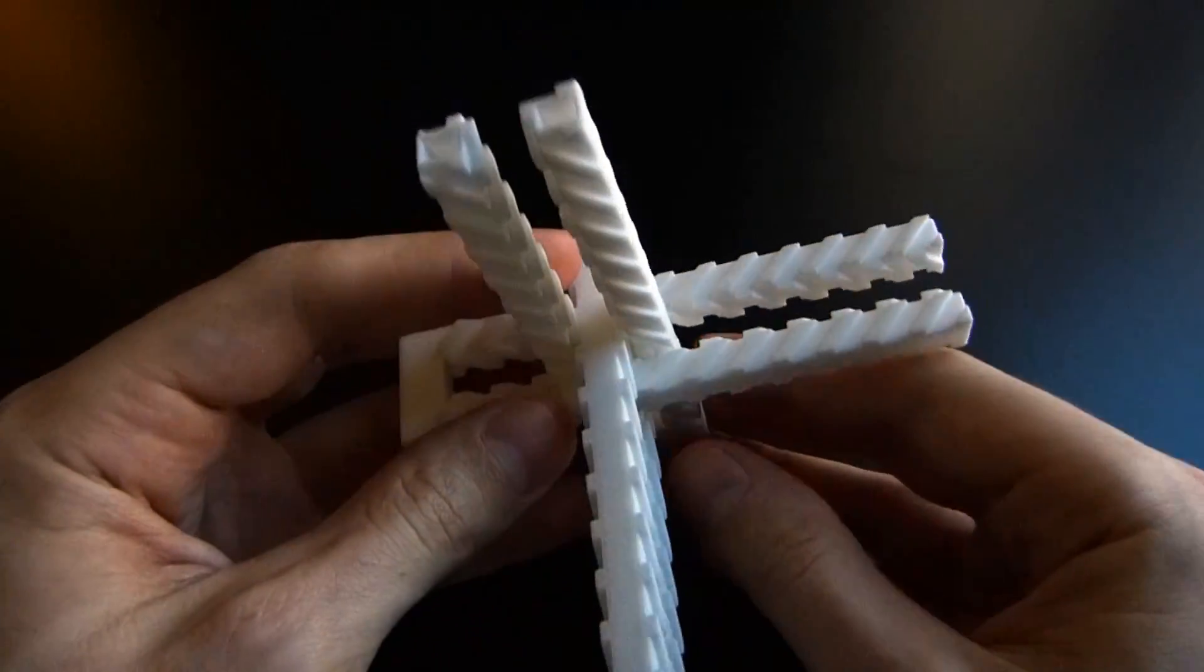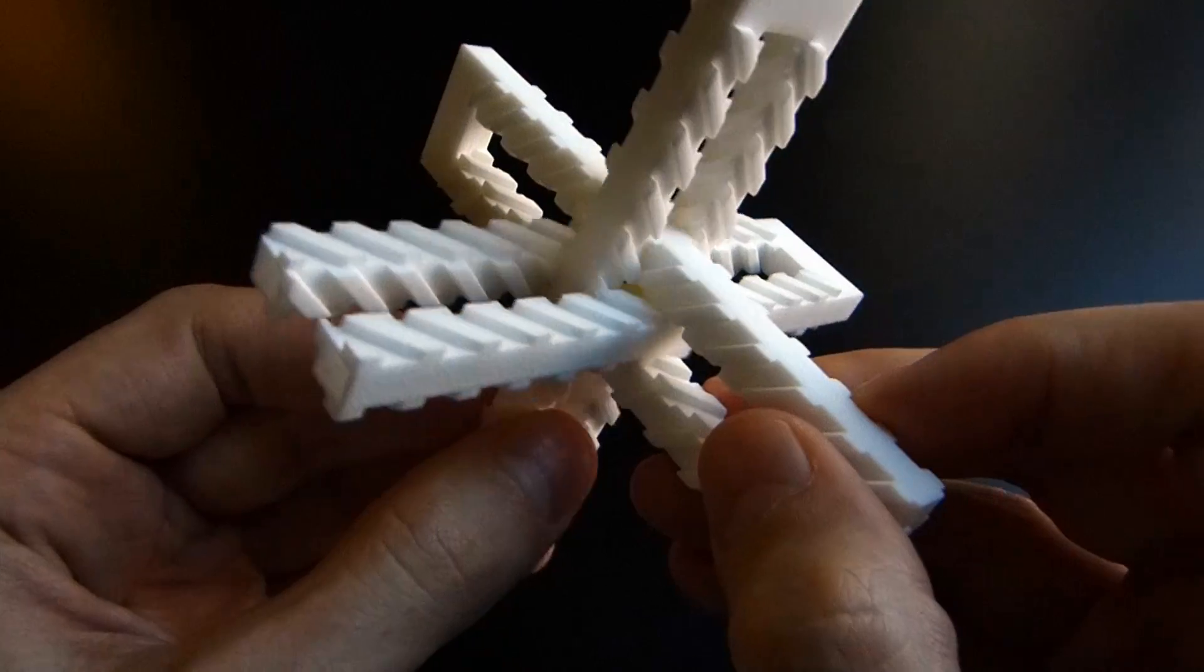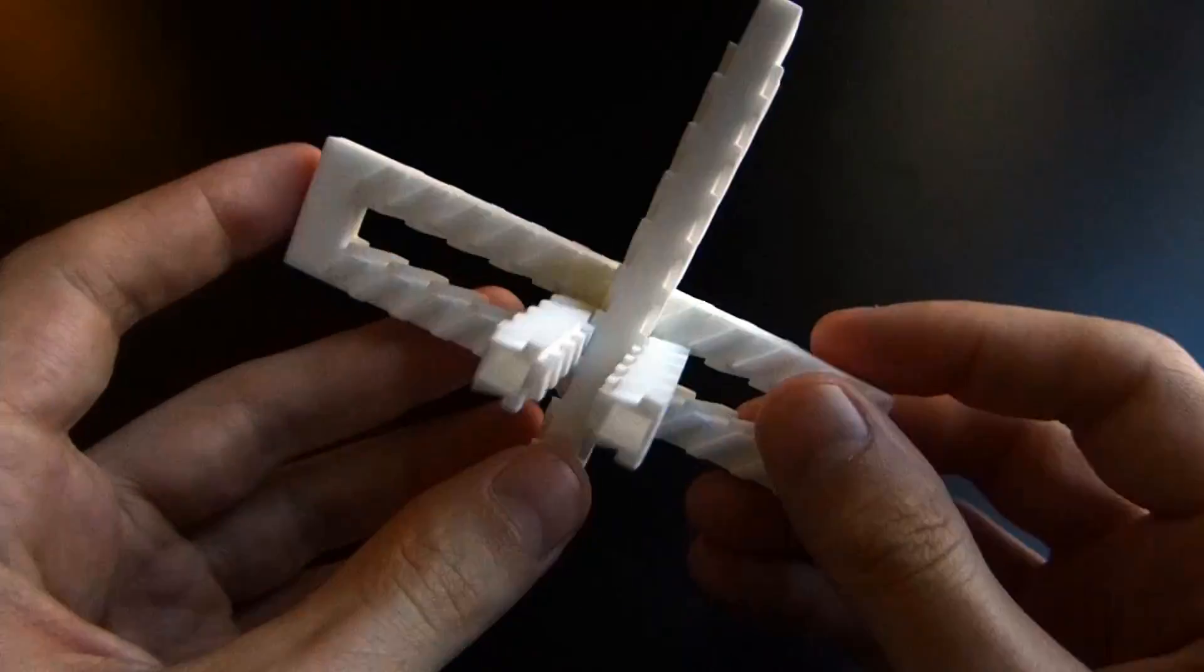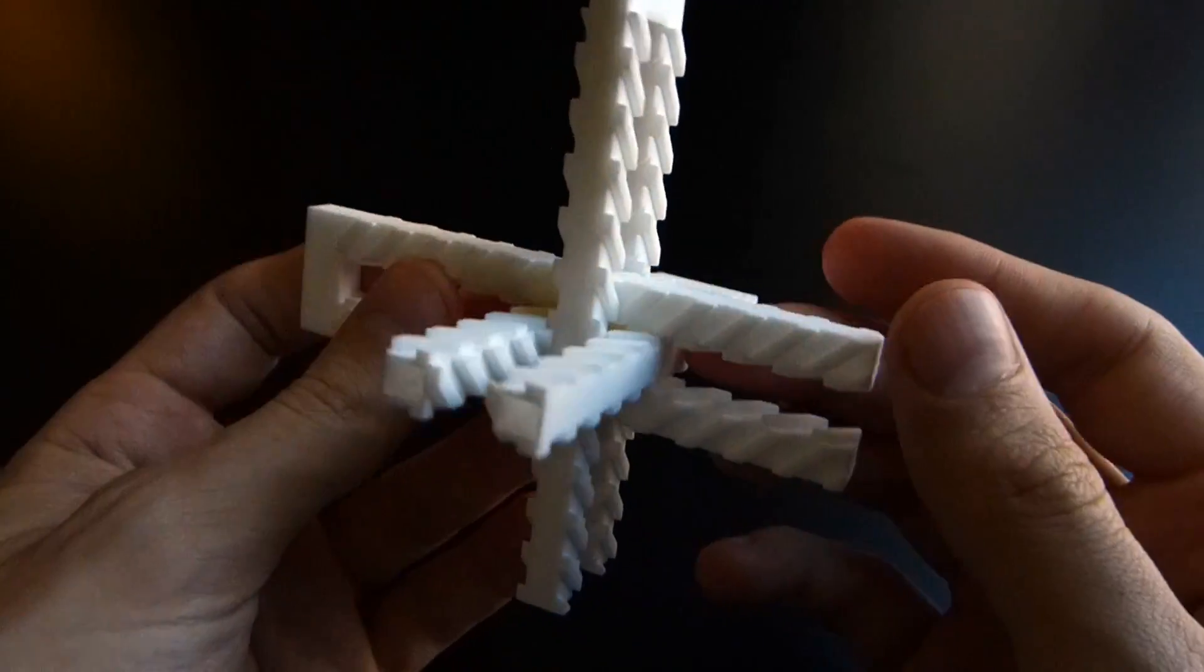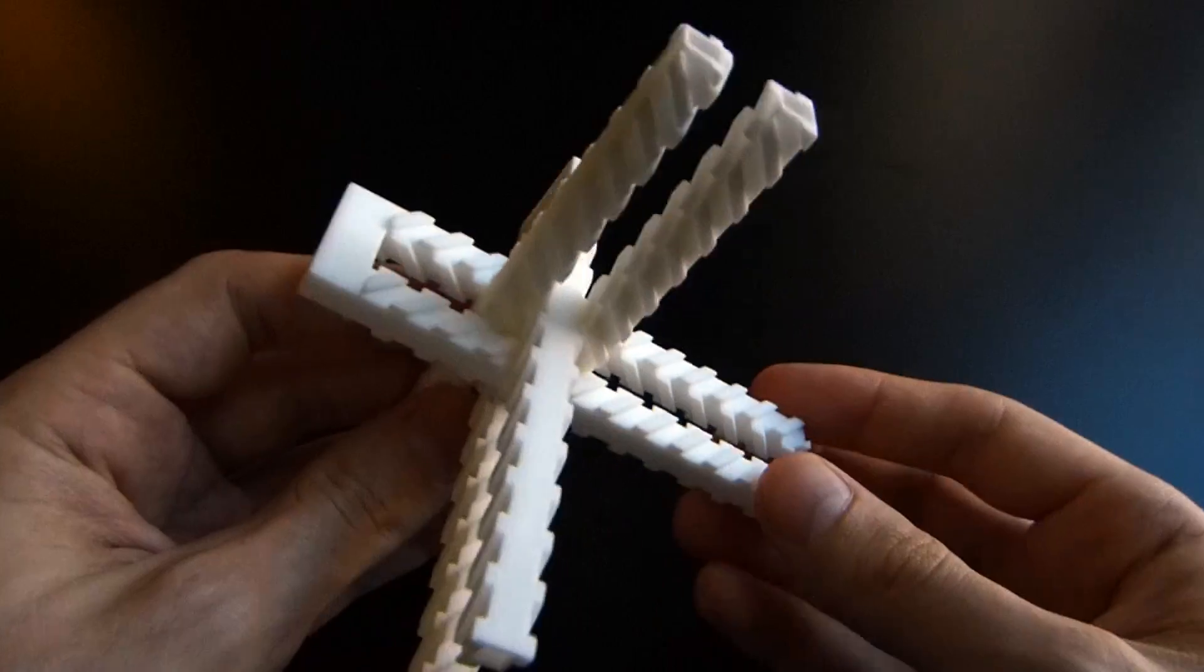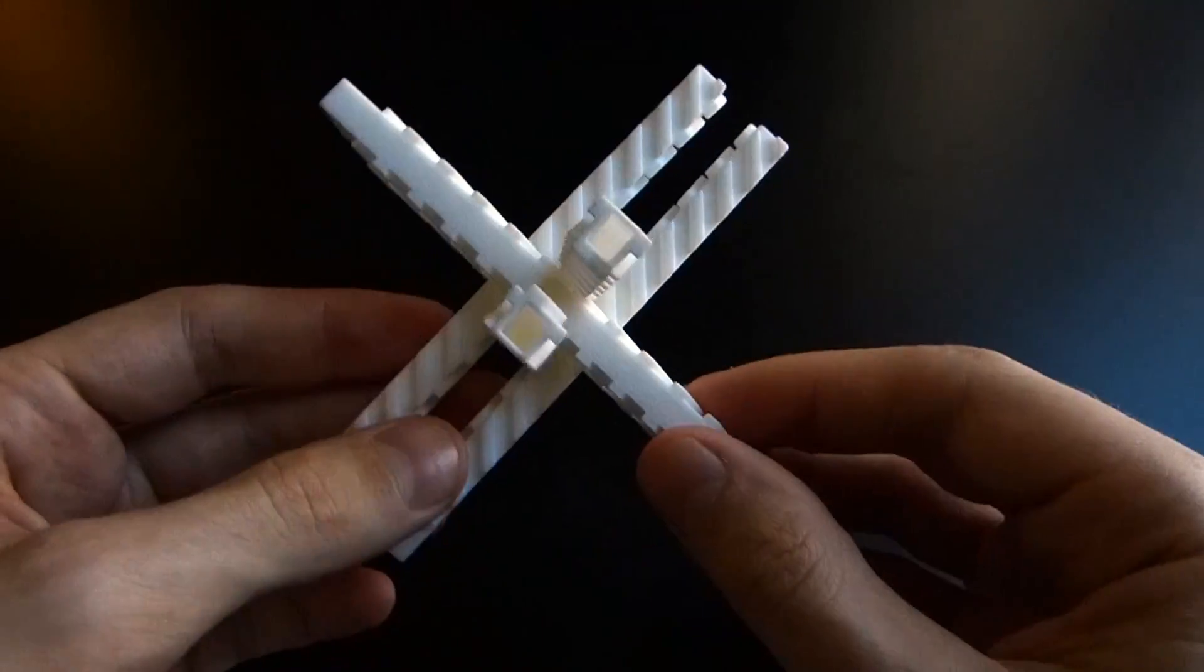The reason we don't close it off is because there's really very little clearance in between the teeth of the racks. And so if they were printed in place, then it would fuse together in the middle here. So they had to be printed separately, and so we have to be able to put them together. And so that's why they're not closed off at the end.